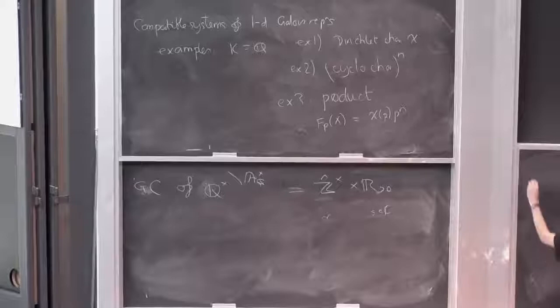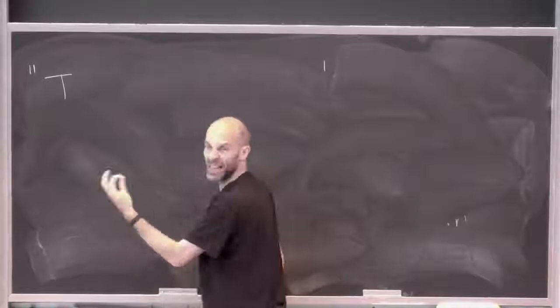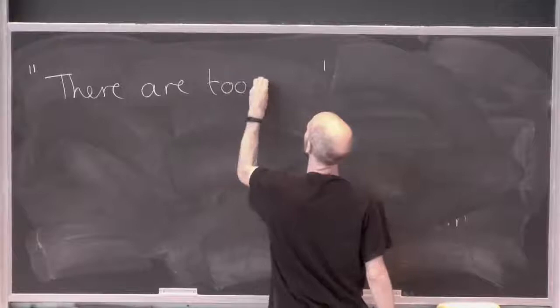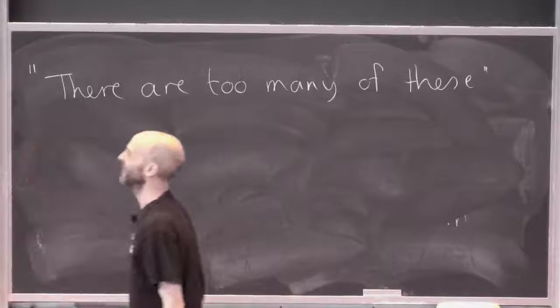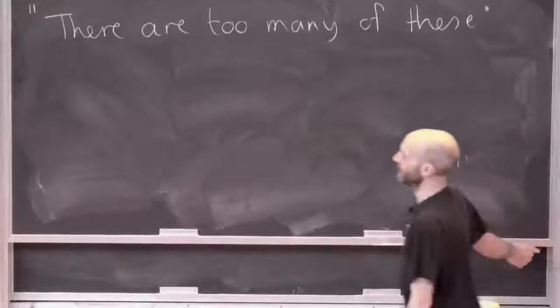There are too many Grössencharacters. I'll quote from Richard Taylor's notes: he defined a Grössencharacter, didn't do any examples, and then just wrote 'there are too many of these.' What he really means is that the complex numbers are quite scary if you're a number theorist — you're used to countable stuff.